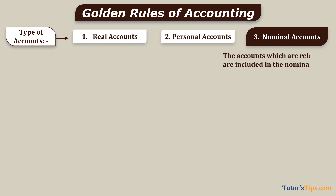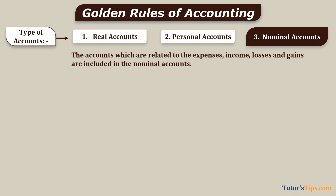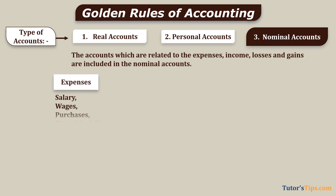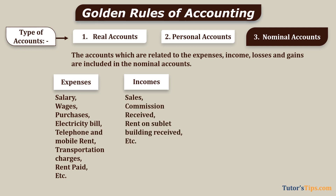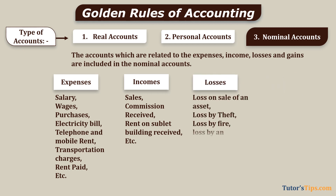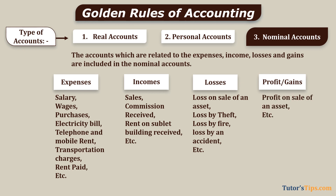Nominal Accounts are accounts related to expenses, income, losses, and gains. Expense accounts include salary, wages, purchases, electricity bill, telephone and mobile rent, transportation charges, rent paid, etc. Income accounts include sales, commission received, rent on sublet building received, etc. Loss accounts include loss on sale of an asset, loss by theft, loss by fire, loss by accident, etc. Profit or gains accounts include profit on sale of an asset, etc.